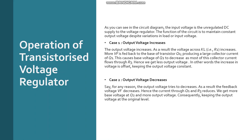Now let us see case 2: output voltage decreases. The output voltage tries to decrease, so the feedback voltage Vf decreases. Hence the current through Q1 and R3 also reduces, giving more base voltage at Q2 and more output voltage. Consequently, the output voltage is kept at its original level.